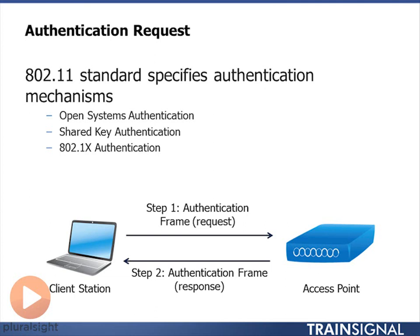With shared key authentication, I send my authentication frame in, and the access point sends me back a challenge text. I respond to that challenge text using my shared secret key. The access point recognizes that I have the shared secret key, and therefore I have successfully authenticated. I then receive an authentication frame response accepting me as authenticated on that access point.